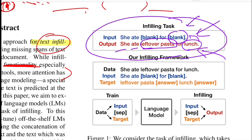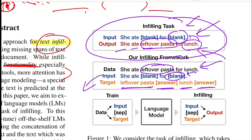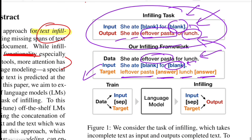Talking about the infilling framework: given actual data, they stochastically create inputs by randomly masking out certain words or sentences depending on the downstream task. In this illustration, the phrase 'leftover pasta' and the word 'lunch' are masked out and replaced with blank tokens. The target is constructed by placing the masked phrase followed by a dummy answer token, then the text for the second blank and another answer token. The input and target are then concatenated. A typical autoregressive language model is trained on this sequence, where at any point the task is to predict the correct next word. Cross-entropy loss is computed, back-propagated, and the model parameters are updated.